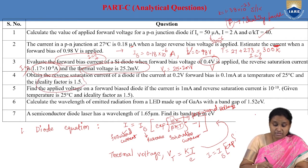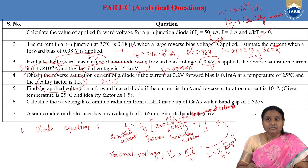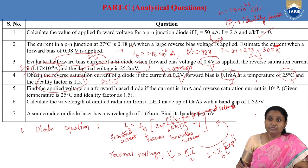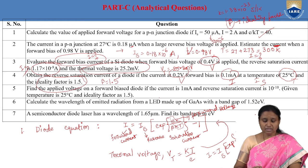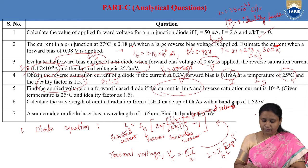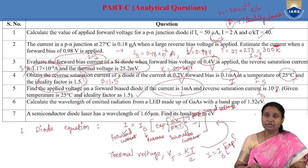In the fourth problem, β = 1.5 is given, forward bias voltage and forward current are given, temperature is given, and we need to find the reverse saturation current IS. In the fifth problem, forward current, reverse saturation current IS = 10⁻¹⁰ A, ideality factor β = 1.5, and temperature are given; we need to find the forward voltage V.